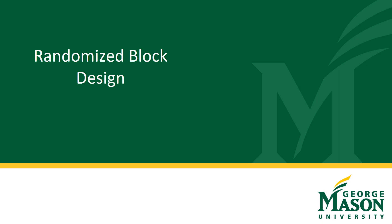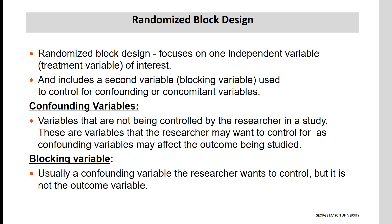In this presentation, we will be discussing randomized block designs. A randomized block design focuses on one independent variable, the treatment variable, of interest, and includes a second independent variable, the blocking variable, that is used to control for confounding or concomitant variables.